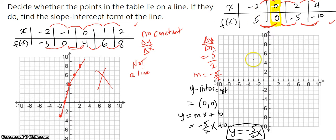Negative 2, 5 is this point right here. 0, 0 is this point. 2, negative 5 comes down to here. 4, negative 10 comes down to here.